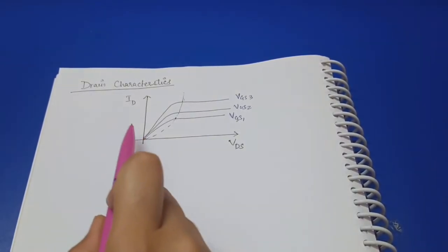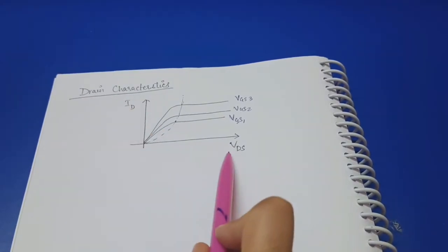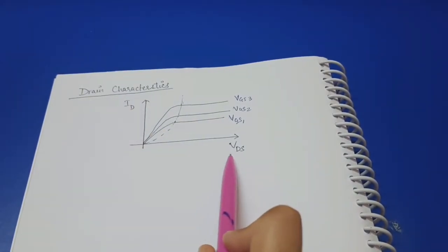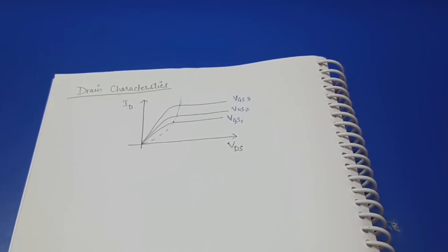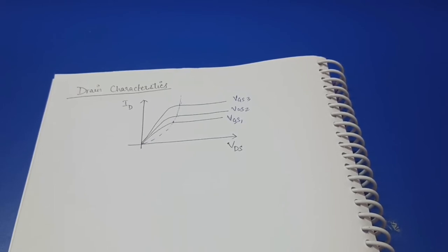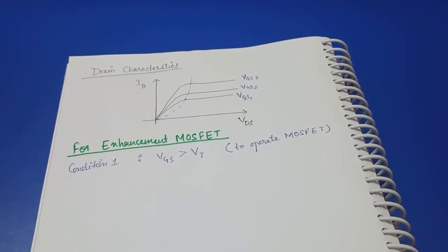Before discussing biasing, let's discuss the drain characteristic of MOSFET. It is a graph between drain current and drain to source voltage, VDS. The MOSFET can be used as an amplifier in the saturation region only, because a small change in VGS can produce a proportionally large change in drain current. In the saturation region, drain current is constant with respect to VDS but varies with VGS.